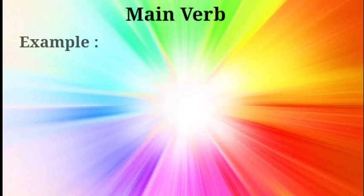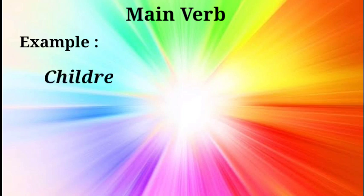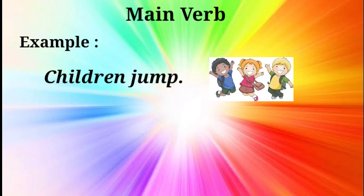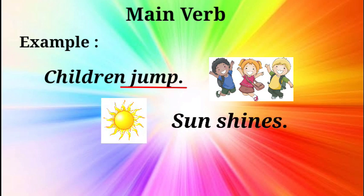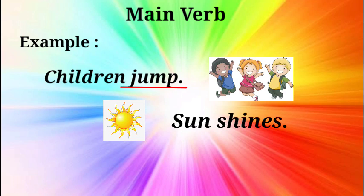Look at these examples. Children jump. In this sentence, what is the action of the children? It is jump. So, we can say that jump is the main verb. In another example, sun shines. Now, in this sentence, the action that sun shows is shine. And hence, shines is a main verb.